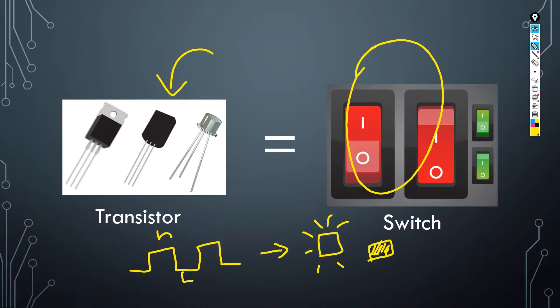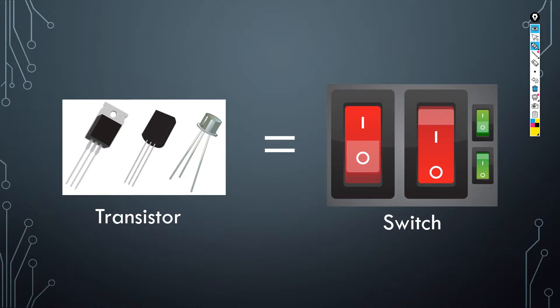So we can control the electrical signals using transistors, and we can process the output of the machine. In the CPU, there are two major units — the arithmetic and logical unit (ALU) and the control unit. There are many logic gates, such as gates for addition, subtraction, multiplication, and logical operations. These gates are formed as a combination of transistors. There are also many memory locations called registers, which are also made up of transistors.